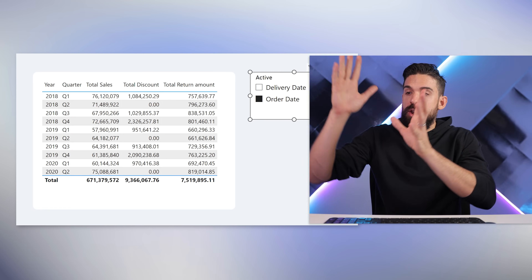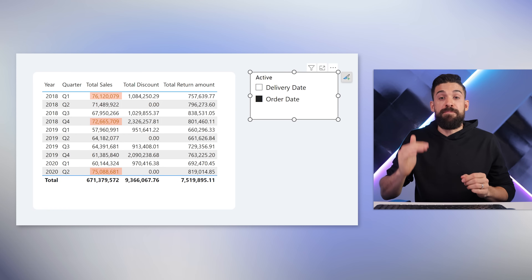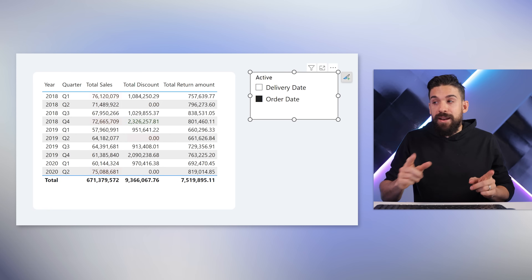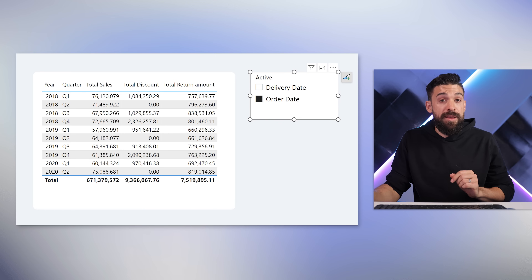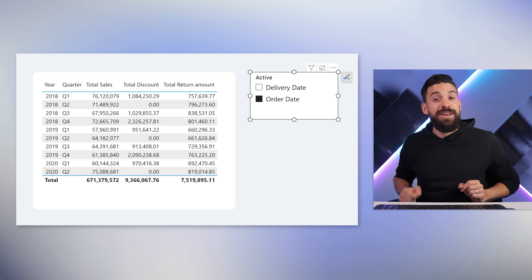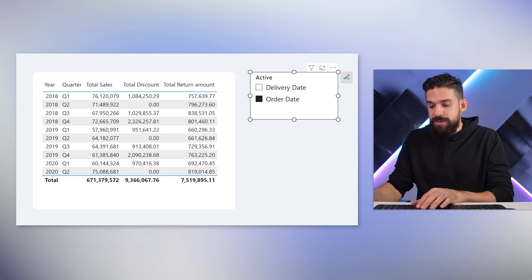Now it's time for example number three. We can also use calculation groups to make our life a bit easier when it comes to conditional formatting. Let's say we want to highlight all of the total sales that are above the average, or the maximum and the minimum. Let me show you the measure first and then how it becomes easier when we use calculation groups.